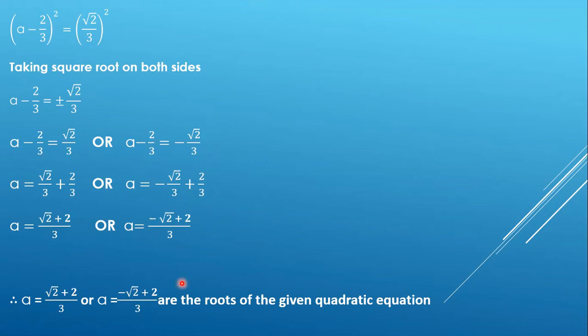I hope it is very clear to you all how we are supposed to solve questions when the coefficient of x² is not 1. What we have to do is just divide the coefficient throughout the equation.